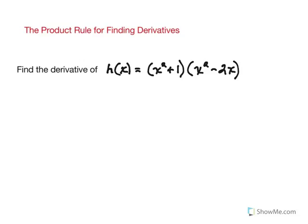Now according to the product rule, you need to identify two different variable expressions. So let's consider this first one, the x squared plus 1, as the f function and the other one as our g function.